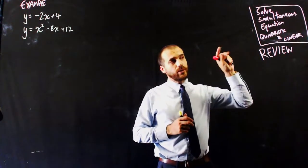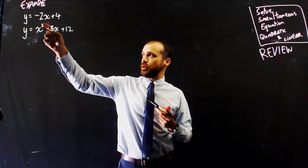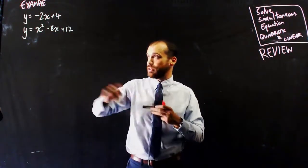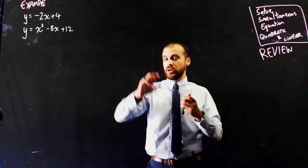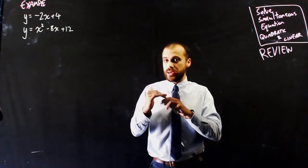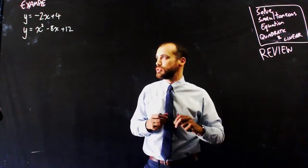Another review: solving simultaneous equations, quadratics and linears. If we've got two equations, y = -2x + 4, which is a straight line, and y = x² - 8x + 12, which is a quadratic, we can find out where they meet, or if they meet, using simultaneous equations.